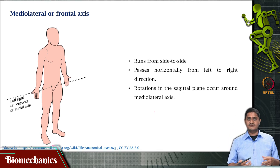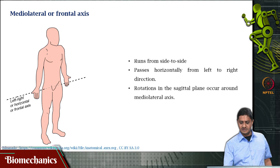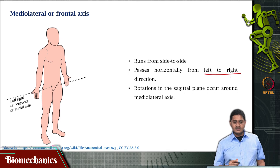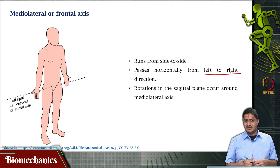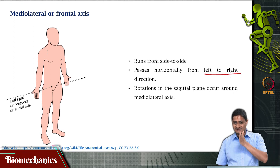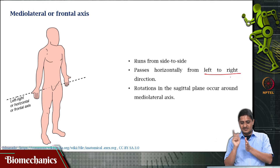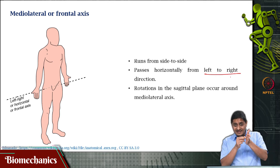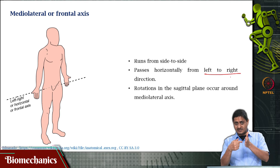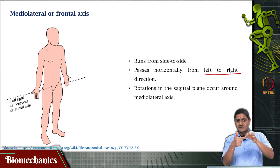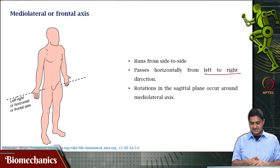The medial-lateral axis runs from side to side, passing horizontally from left to right. Any movement that happens in the sagittal plane — the plane that divides the body into a left side and a right side — will happen about this axis. If there is any rotation occurring within the sagittal plane, that rotation happens about the medial-lateral axis.